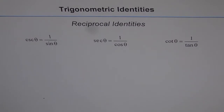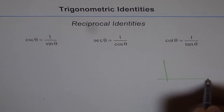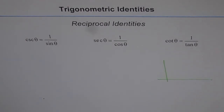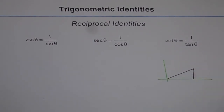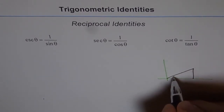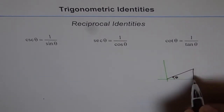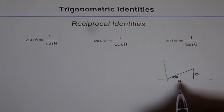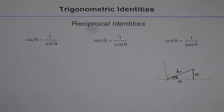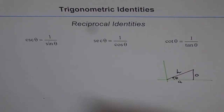Let's look at this using a standard right angle triangle. In this triangle we have the angle theta. Here is the opposite side — O for opposite, A for adjacent, and H for hypotenuse. I could use XY coordinates but I want you to remember SOHCAHTOA for the time being.